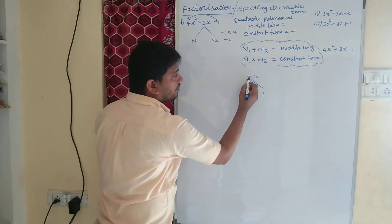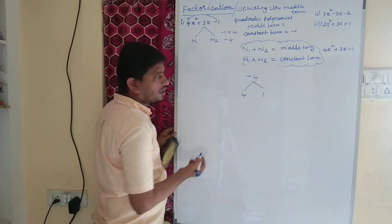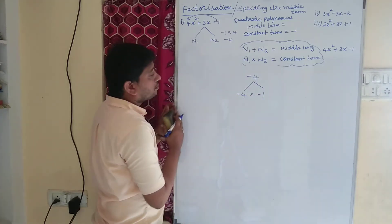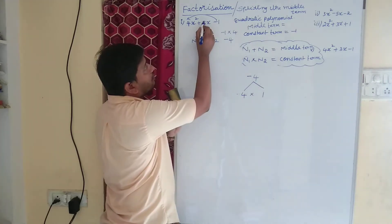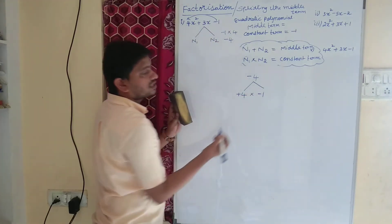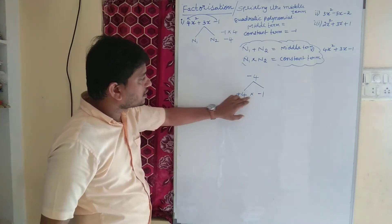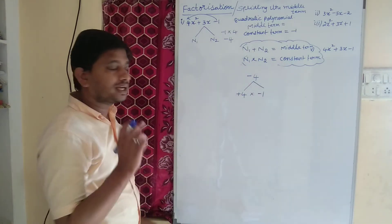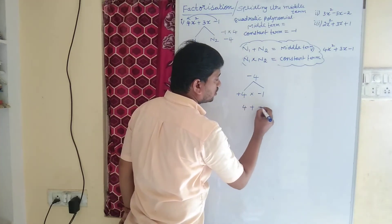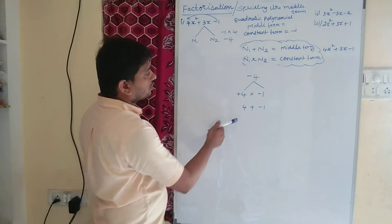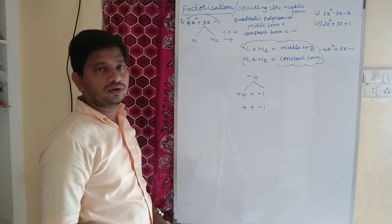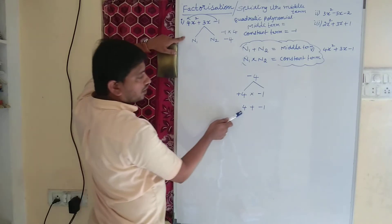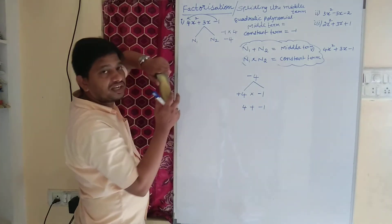But if you observe, we have minus 4. So I can write minus 4 as plus 4 into minus 1, because the middle term is plus 3x. Let us consider plus 4 and minus 1. Why? Because plus into minus gives minus 4 — that satisfies the product condition. And for the sum condition: 4 plus minus 1 equals 3, which is our middle term.